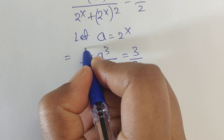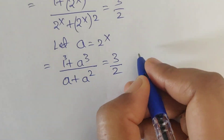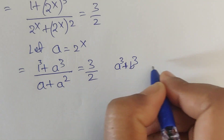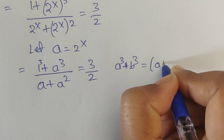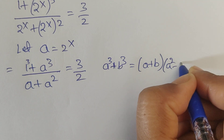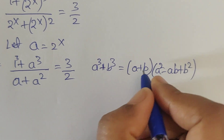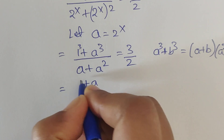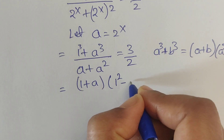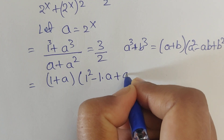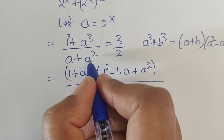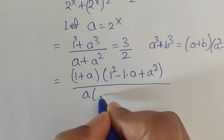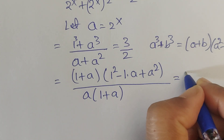The numerator 1 plus a cubed is in the form of a cube plus b cube. We know the formula: a³ plus b³ equals (a plus b)(a² minus ab plus b²). Applying this formula, the numerator becomes (1 plus a)(1 minus a plus a²). In the denominator we take out a as common, giving a(1 plus a), equals 3/2.